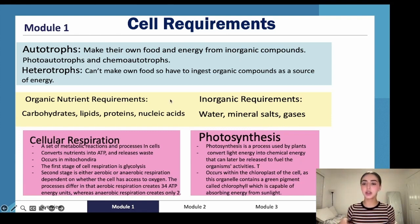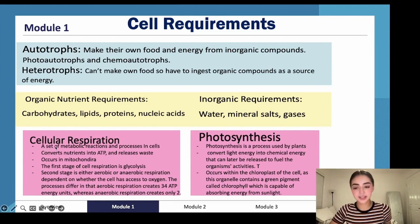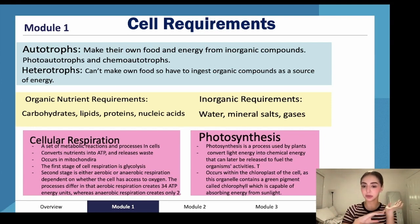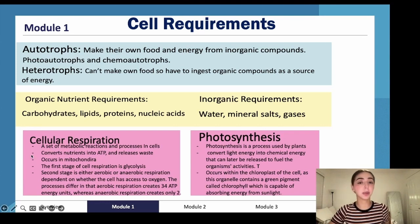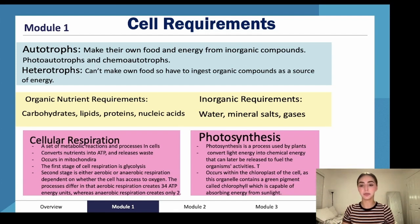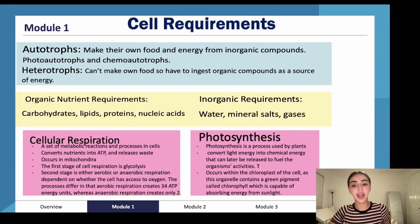Cellular respiration is a set of metabolic reactions and processes in cells where we convert nutrients into ATP and release some waste in the process. It occurs in the mitochondria. The first stage is glycolysis, where we convert sugar into ATP.